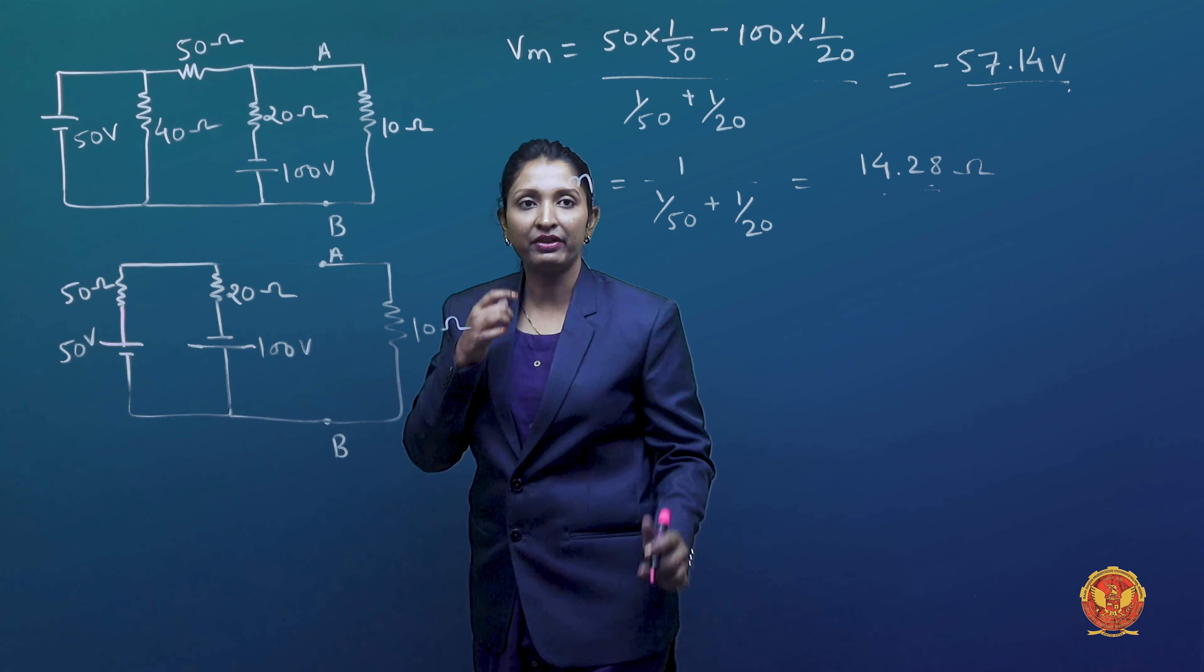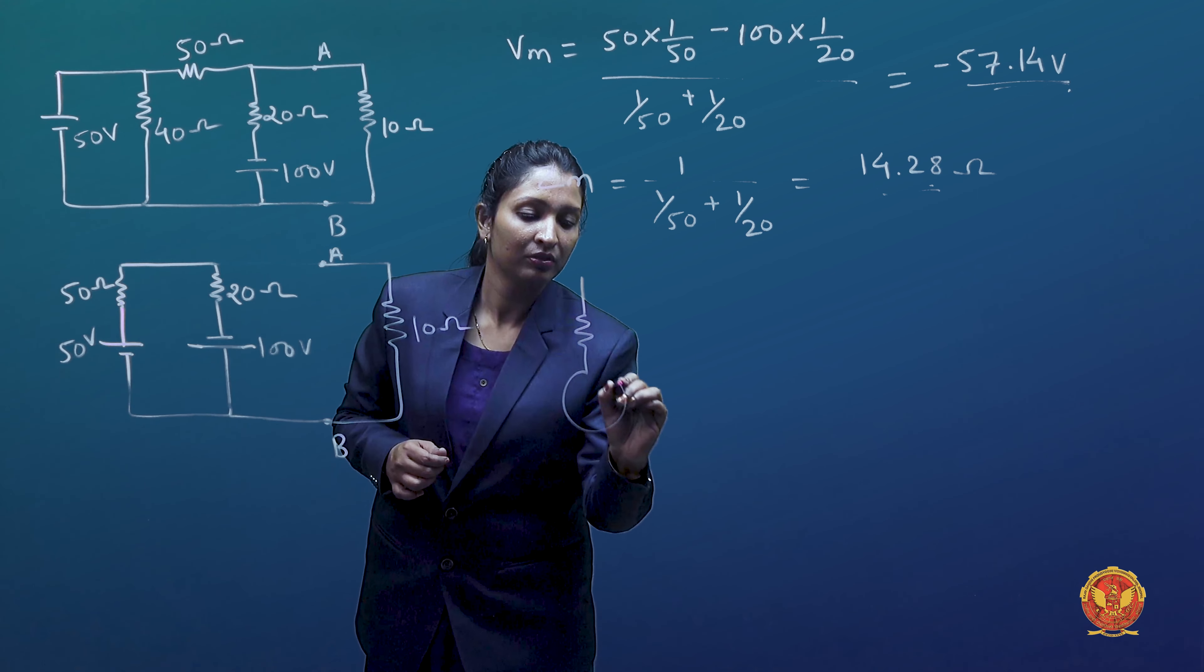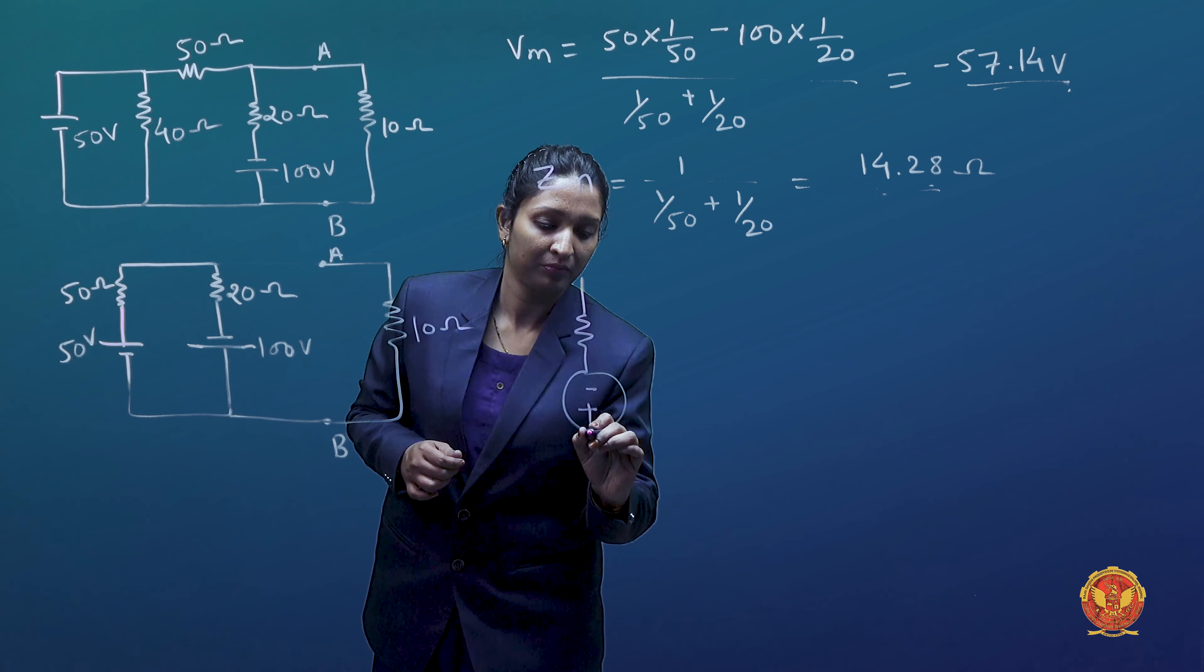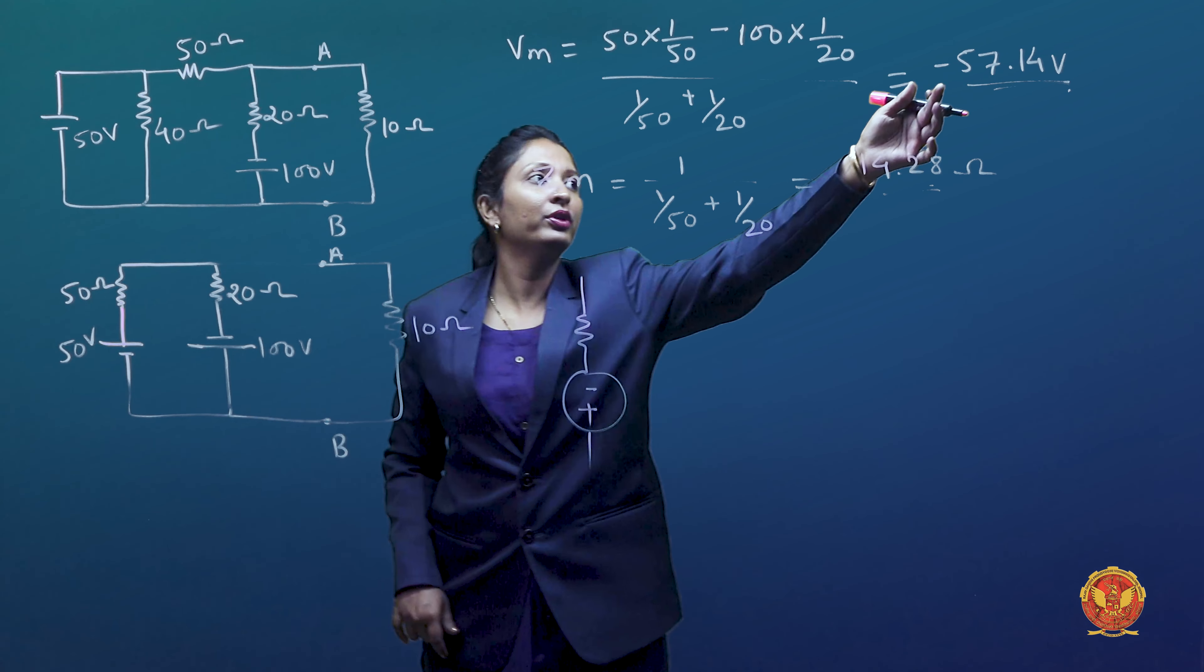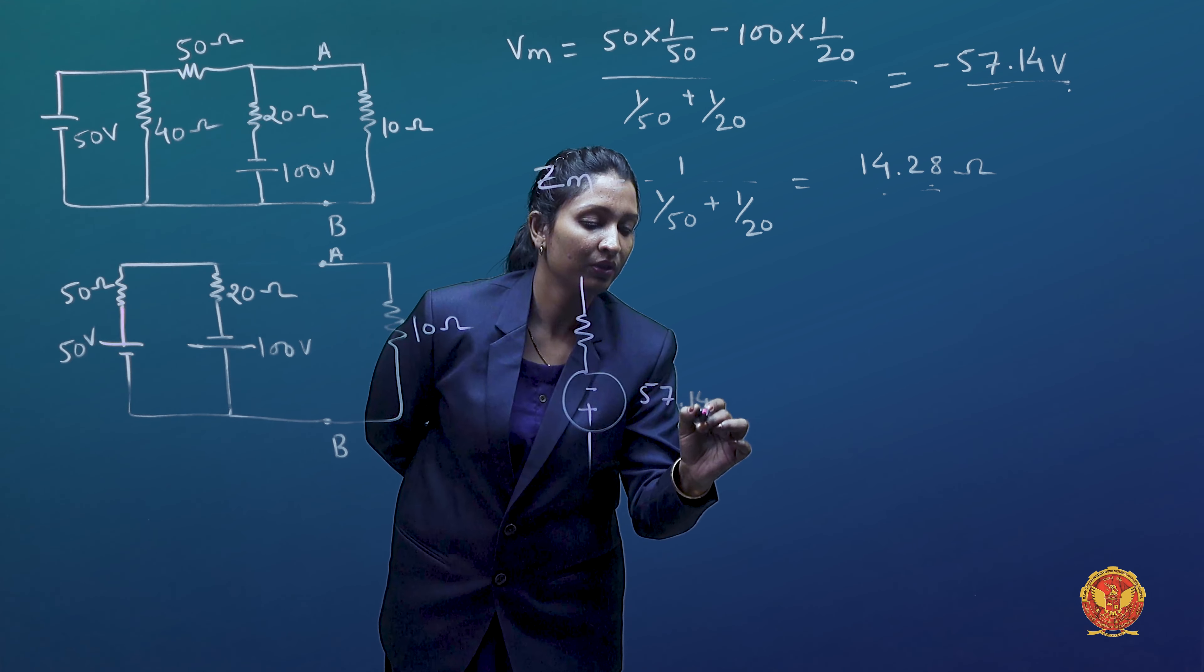We will draw the equivalent circuit. This is equal to the equivalent circuit. The sign will be negative. Why? Because our voltage is negative. 57.14 volts.